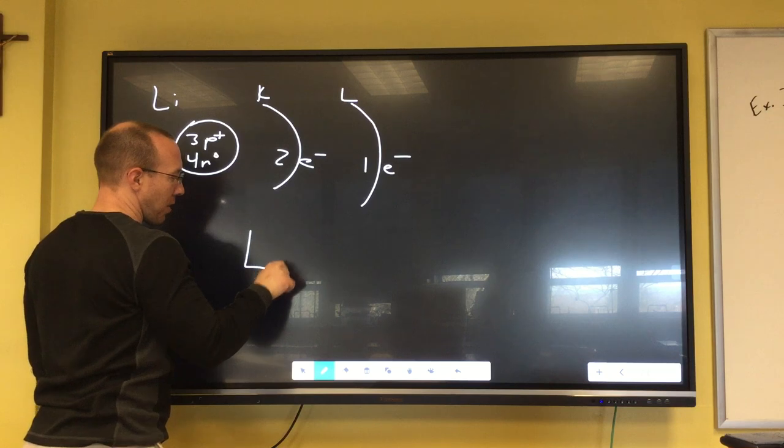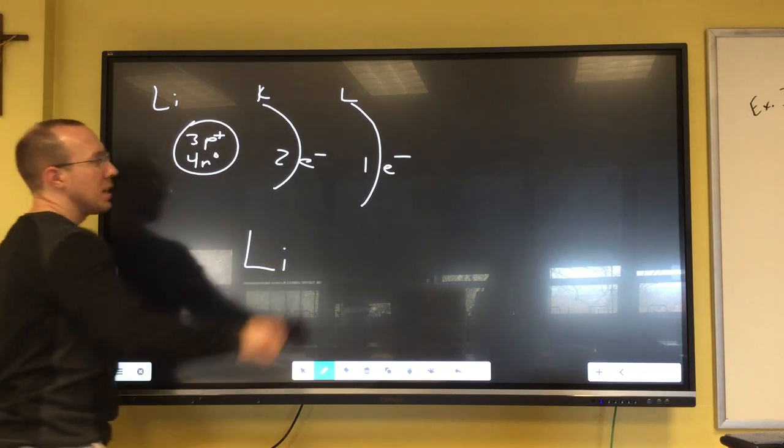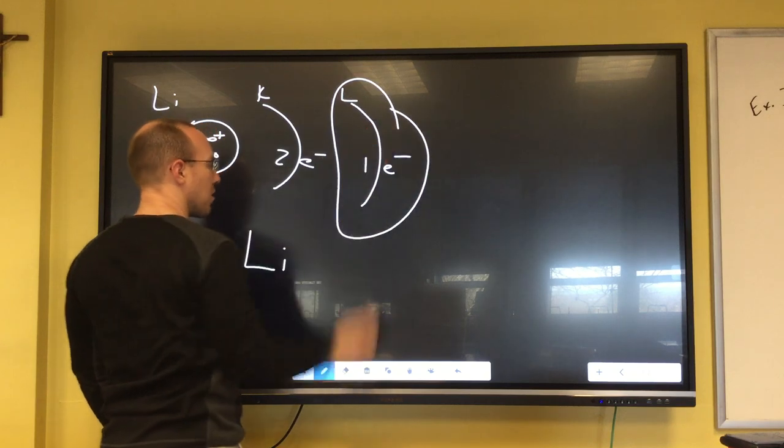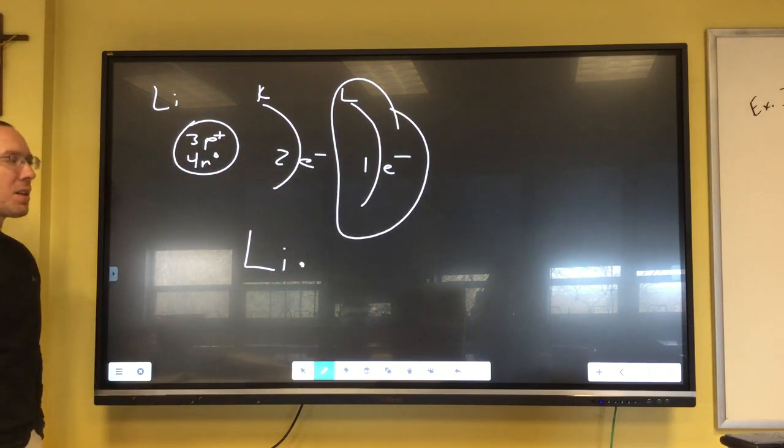So the way we write this for our electron dot diagram, our electron dot model, is we look at the very last energy level and that's how many valence electrons there are. So for lithium there would be one.